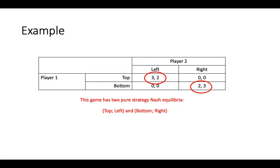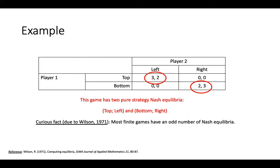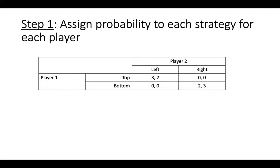Because this game has two pure strategy Nash Equilibria, we know that it also has a mixed strategy Nash Equilibrium. The reason why we know this is that it is a curious fact that most finite games have an odd number of Nash Equilibria. So, how do we find the mixed strategy Nash Equilibrium of this game?